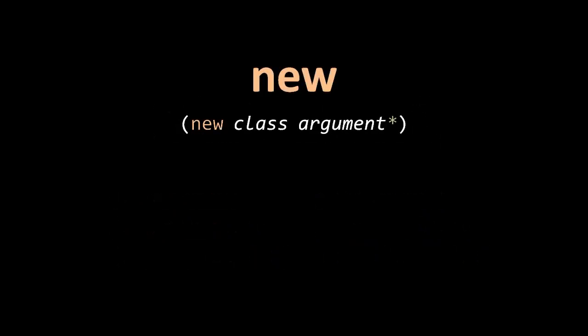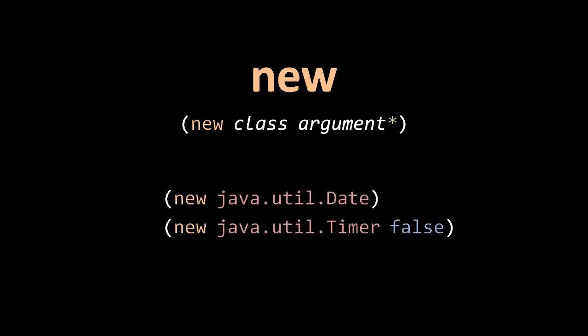The special form new is what we use to instantiate Java classes. You simply specify the class as a symbol, and then you follow it with whatever arguments are appropriate for the constructor. Notice that I wrote the class names here fully qualified with their package names. It is possible in Clojure to import classes such that you don't have to fully qualify their names with their packages, but we'll discuss that later.